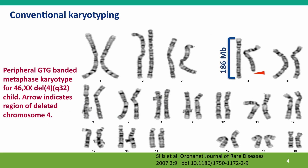Here's an example of the kind of karyotyping that you get using the standard dye technique. You can see that there are lots of bands, and a skilled cytogeneticist would be able to recognize the patterns and say, well, that's chromosome 8 and that's chromosome 9. Here is an example of the technique being used diagnostically — a child who has a deletion in one of the copies of chromosome 4, indicated by the arrow that this segment of chromosome 4 is missing.